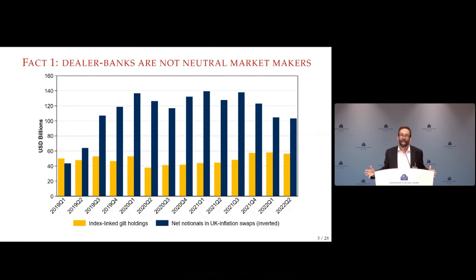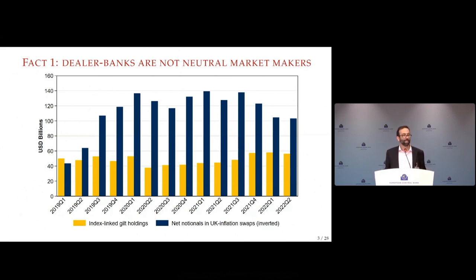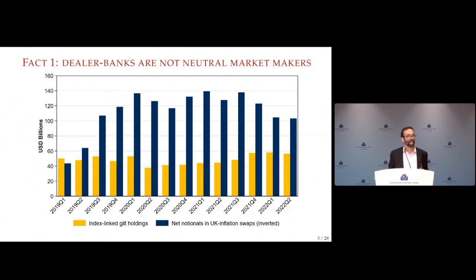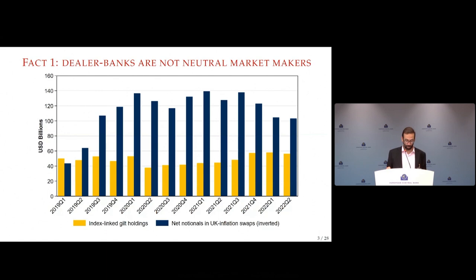Fact one: if you look at the dealer banks' net notional — all the protection they've sold against inflation minus all they bought — that number is not zero. It's 120 to 140 billion throughout this period. Why is zero the null hypothesis? They're dealer banks — they buy, sell, and hold nothing. And yet that is not what's going on. Moreover, it's well above their holdings of index bonds. These banks are not behaving as dealers; they're behaving as insurers, selling inflation insurance — probably because there are nice fees in selling insurance, until inflation comes and you have to pay it out. By our calculation, over the last two years these banks have lost something like 20 billion pounds.